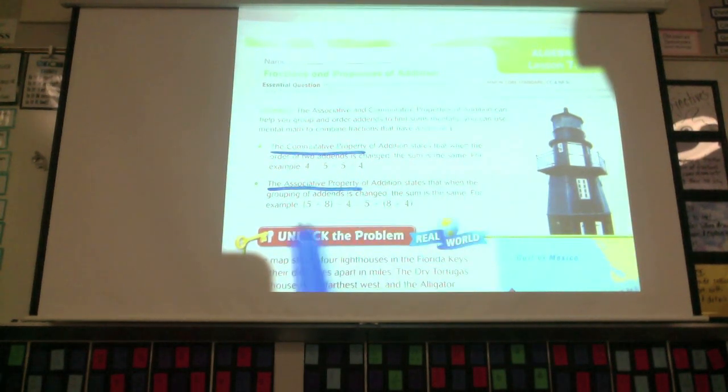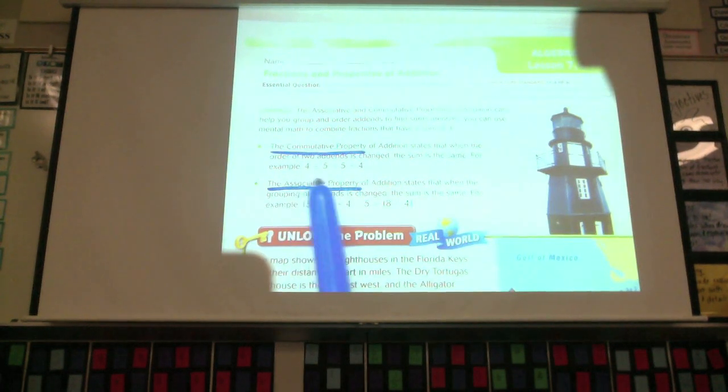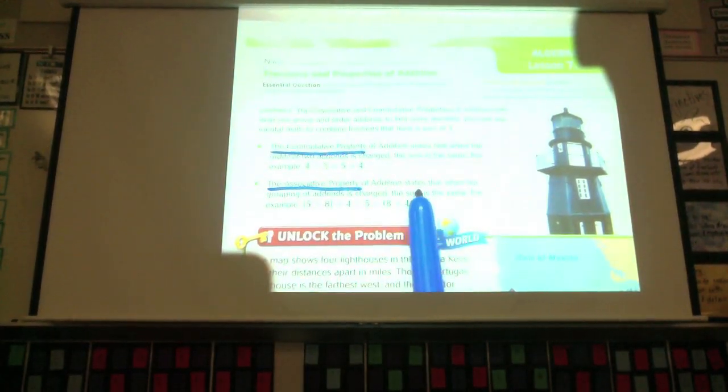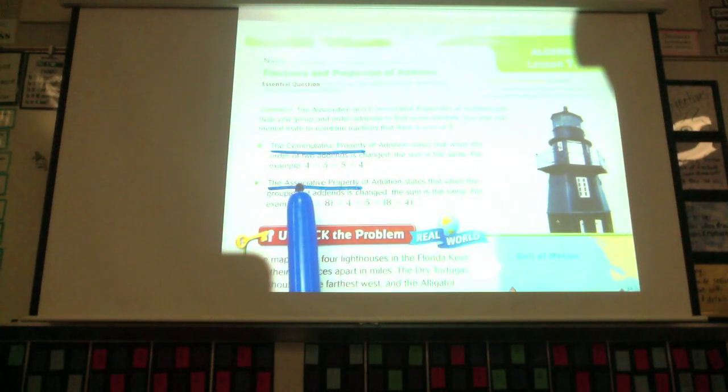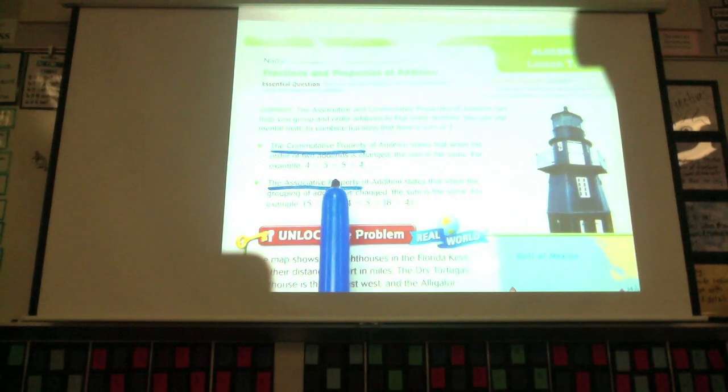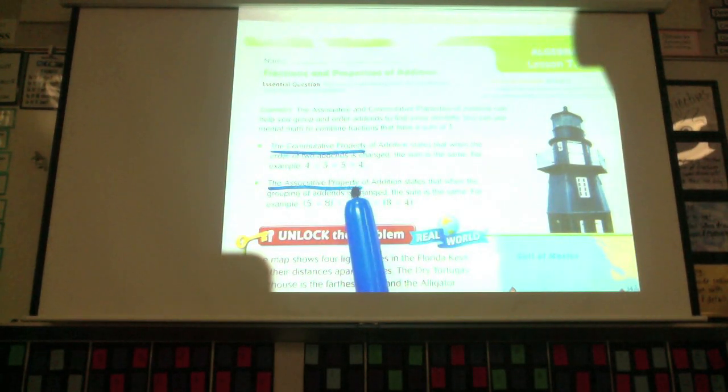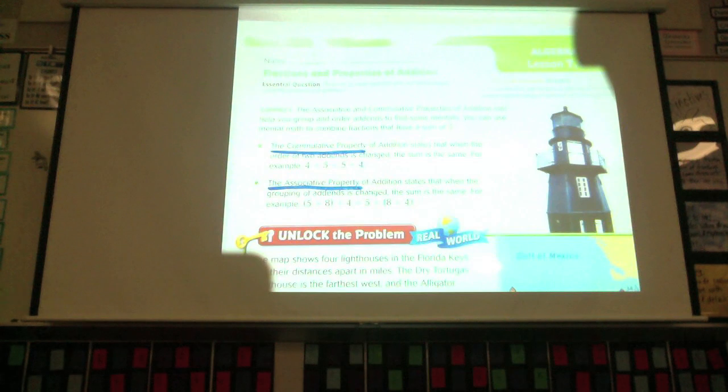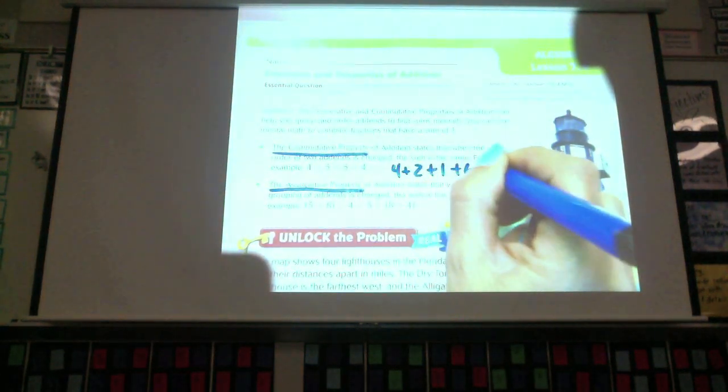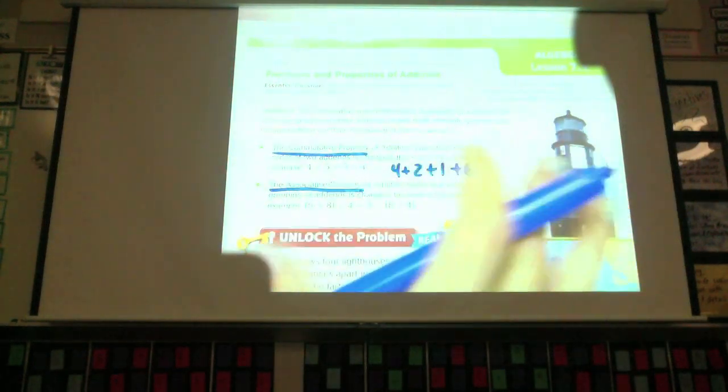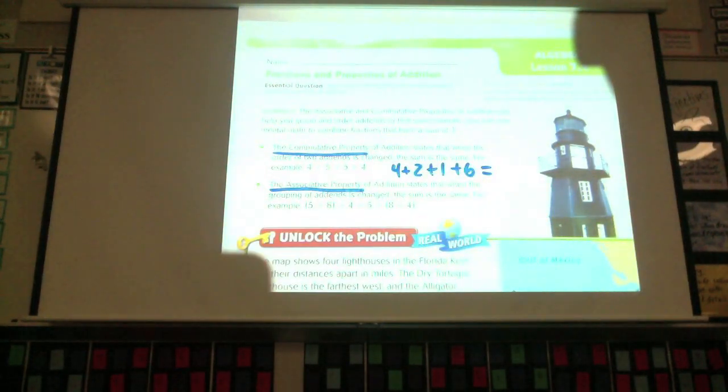The commutative property states when the order of two addends is changed, the sum is still the same. So it doesn't matter what order you add them in. If I do 4 plus 5, how much does 4 plus 5 equal? 9. If I change the order and do the 5 first, 5 plus 4, I still have 9. So the order you do your adding doesn't matter. Remember, if I had 7 digits that I was adding, if I was doing 4 plus 2 plus 1 plus 6, you get the idea?